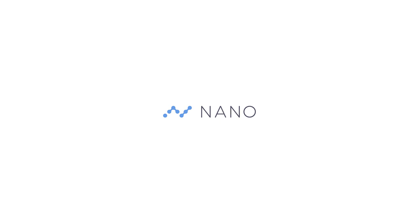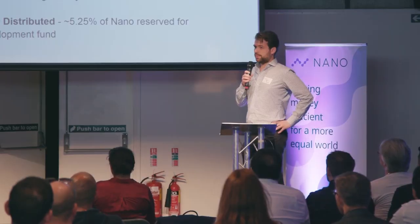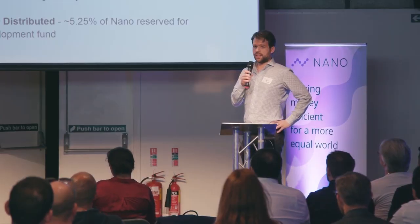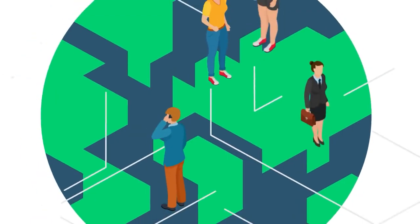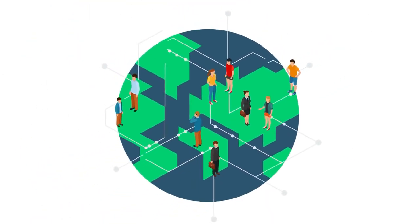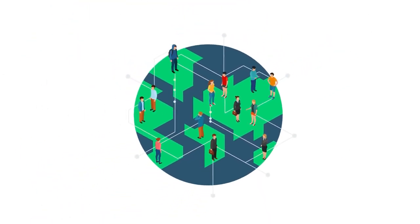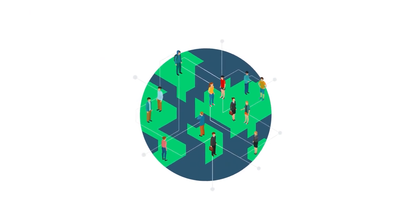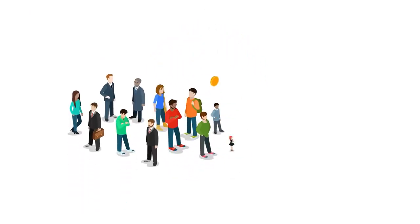A lot of people don't know that Nano was never an ICO. We didn't sell any of the coins out there when we initially put them out — they were given out for free. We had a very large distribution over areas where people don't have a high income,